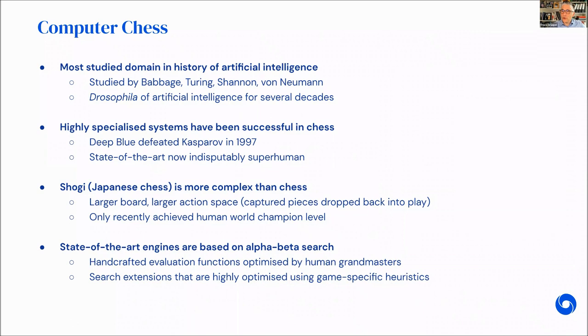Let's turn to computer chess. Not that many people know Go, but chess, particularly in the West, is a very well-studied domain in the history of artificial intelligence. It's been studied by Babbage, Turing, Shannon, von Neumann, all the great minds of computer science. It really is a test bed for AI research. What had been successful up to that point had been very specialized systems. Deep Blue, of course, famously defeated Kasparov in 1997.